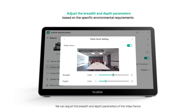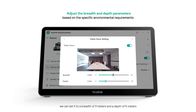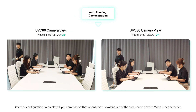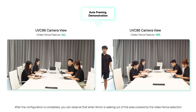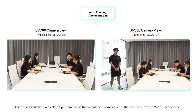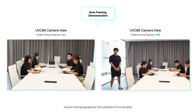We can adjust the breadth and depth parameters of the video fence based on specific environmental requirements. For instance, considering the current conference room situation, we can set it to a breadth of 3 meters and a depth of 6 meters. After the configuration is completed, you can observe that when Simon is working outside the area covered by the video fence, he won't be recognized by the camera's AI functionality.